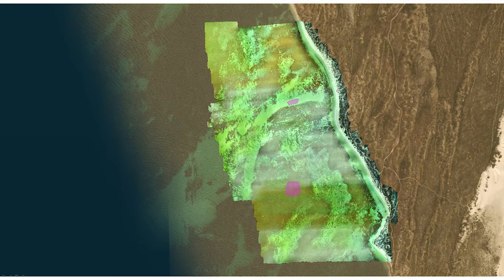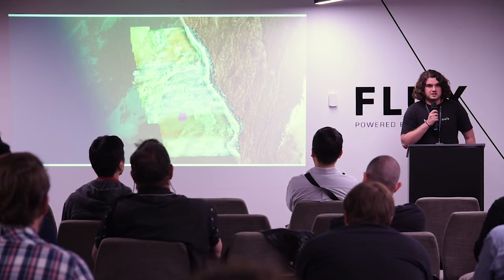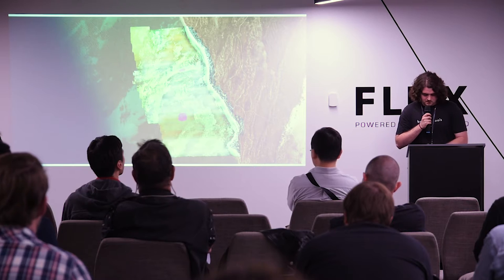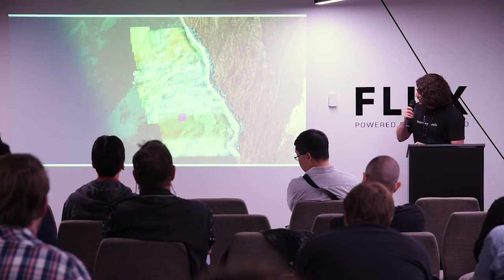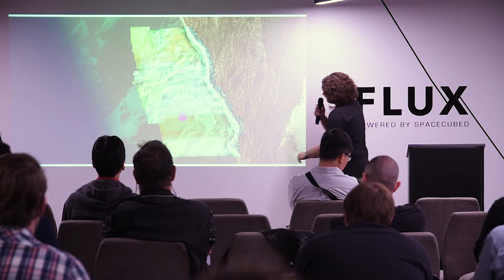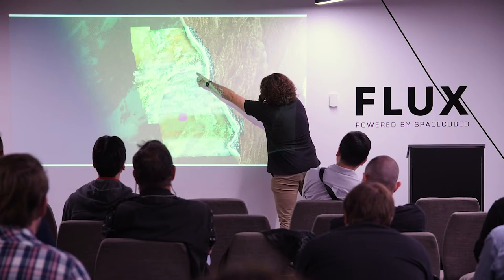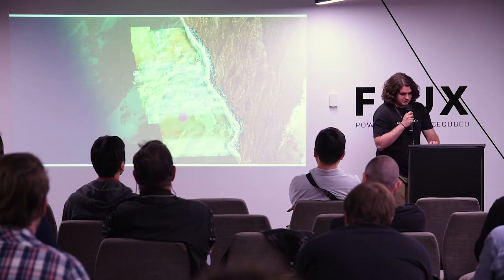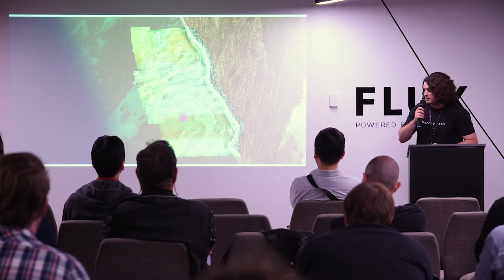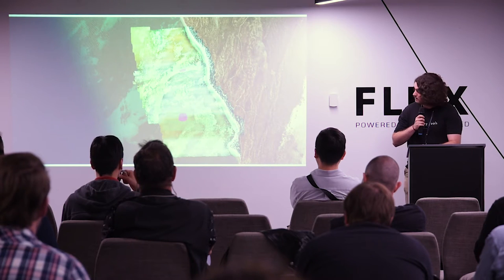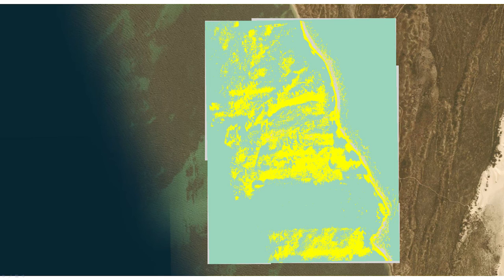Then we threw our orthomosaics into a QGIS plugin called SCP. For the preliminary analysis we just did to test it out, we pretty much drew our areas of interest. So here's some macrophytes here, some sand up there, and basically we told the plugin what was going on - so training areas.